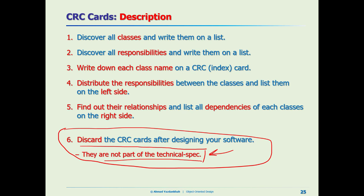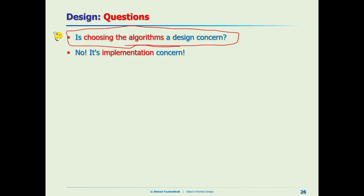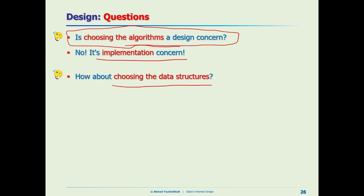Now a couple of questions regarding design. Is choosing the algorithm a design concern — should the software architect choose the algorithm for the developer? No, absolutely not — it's an implementation concern. Similarly, is choosing the data structure a design concern? No, again it's an implementation concern.